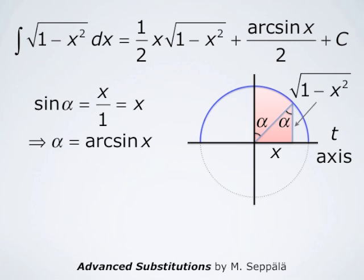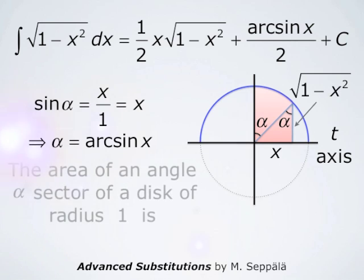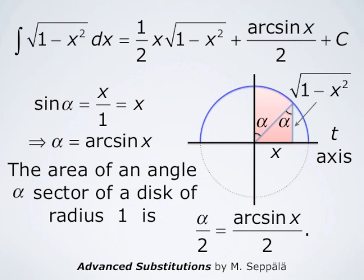The area of an angle-alpha sector of a disk of radius 1 is alpha over 2. It is computed as alpha divided by the full angle 2 pi, times the area of the disk which is pi times radius squared. Since the radius is 1, this simplifies to alpha over 2. Since alpha equals arcsin of x, the area of the colored pink sector of the disk is arcsin of x divided by 2. This is the second term in the formula for the integral of square root of 1 minus x squared dx.